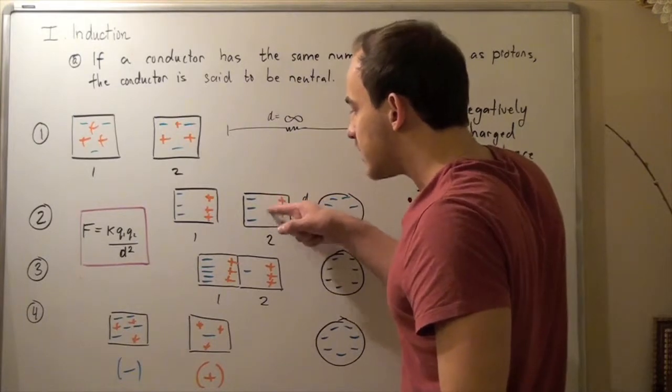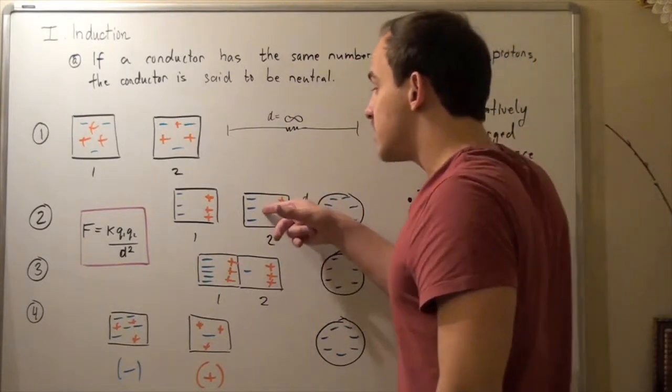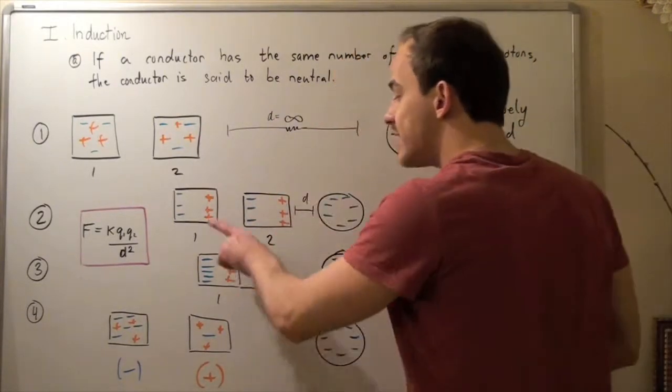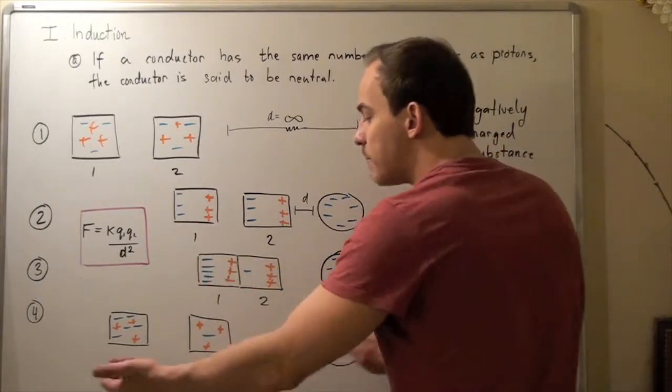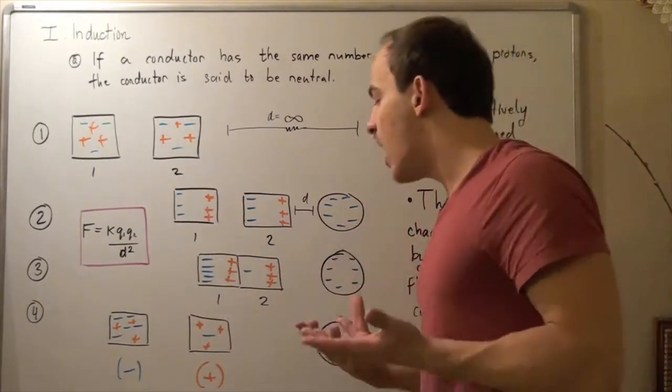Two of these electrons, and I approximated, two of these will jump to this guy. And as soon as I separate them, what will happen is that this guy has a positive charge, a net positive charge.